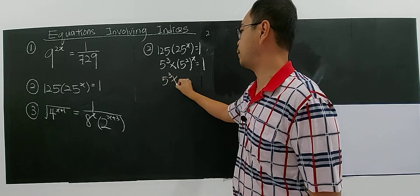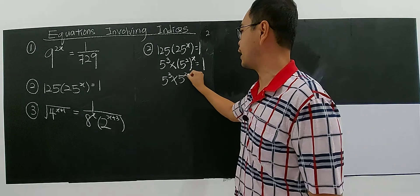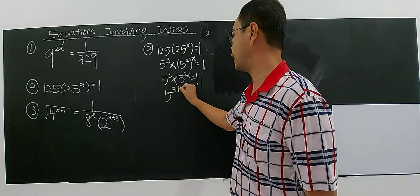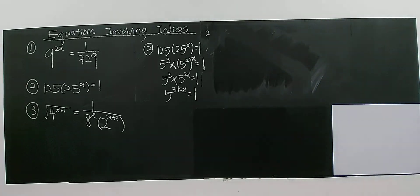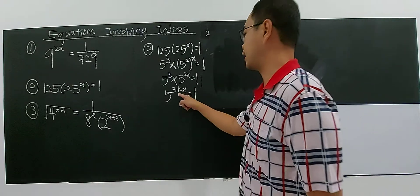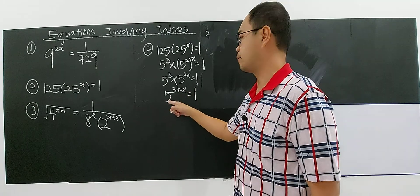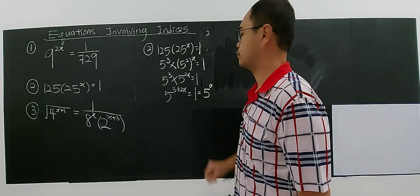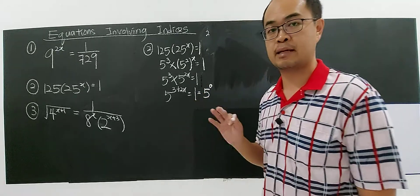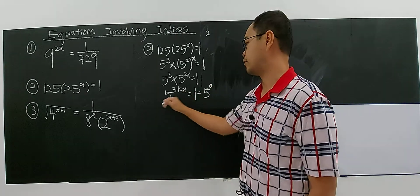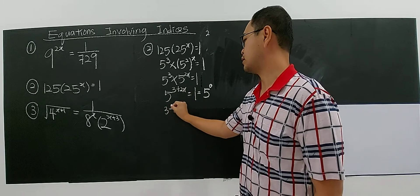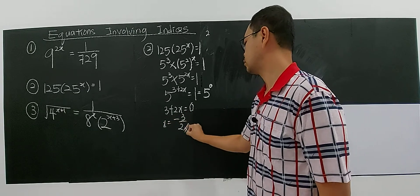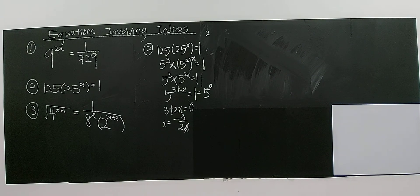So you have 5 to the power of 3 multiplied by 5 to the power of 2x. Since they have the same base, you add the indices, giving 5 to the power of 3 plus 2x equals 1. Now 1 can be written as 5 to the power of 0, because any number to the power of 0 equals 1. So comparing indices: 3 plus 2x equals 0, giving x equals negative 3 over 2.